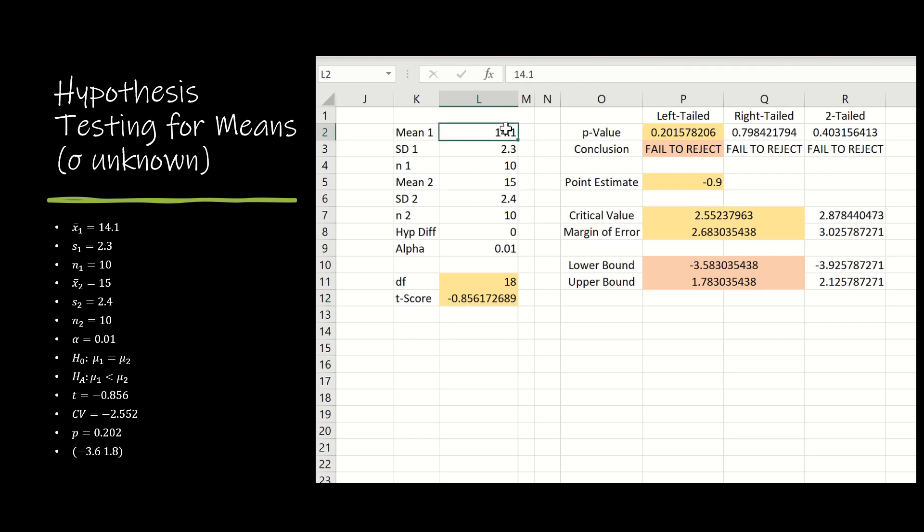Let's take a look now at Excel. As you can see, I have just made these input columns, and this is the information that's given to me in the question. So 14.1, 2.3, 10 for sample 1, and then 15, 2.4, 10 for sample 2, hypothesized difference of 0, alpha of 0.01. Those are all my inputs. Then everything else is going to be calculated for me. The first thing to calculate is degrees of freedom, that's just n1 plus n2 minus 2. So in this case, l4 plus l7 minus 2. And then my t-score formula is the first place where it's really easy to make a mistake. The numerator is fairly straightforward. I'm just taking the first mean minus the second mean minus the hypothesized difference. So notice l2 minus l5 minus l8. Close the parenthesis. That's the entire numerator.